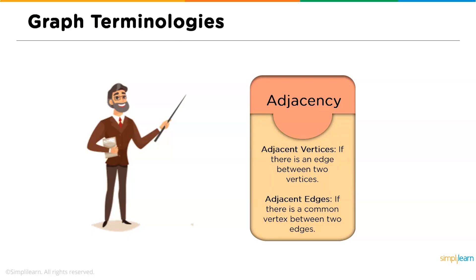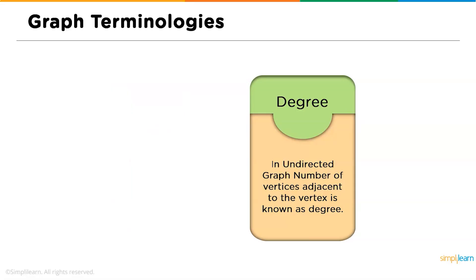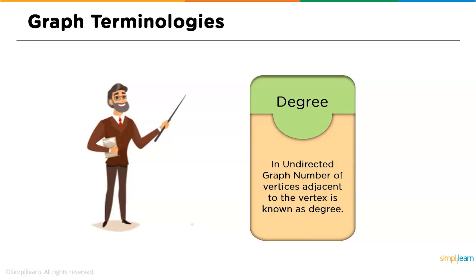Now let's understand graph terminologies. First we have adjacent vertices and adjacent edges. If there is an edge between two vertices — that is, one node is connected to another directly using just one single edge — those vertices are called adjacent vertices. If there is one common vertex between two edges, those two edges are called adjacent edges. Next we have degree: in an undirected graph, the number of vertices adjacent to a vertex is called its degree.